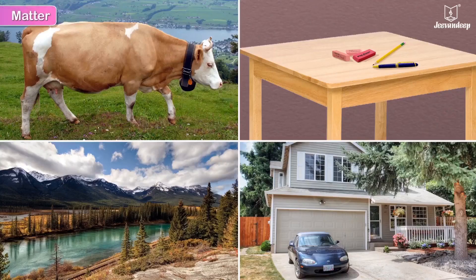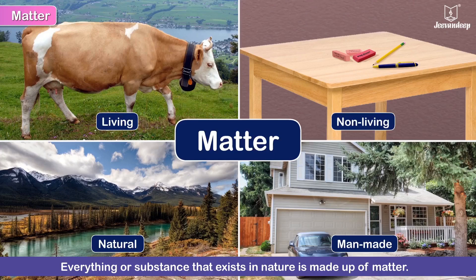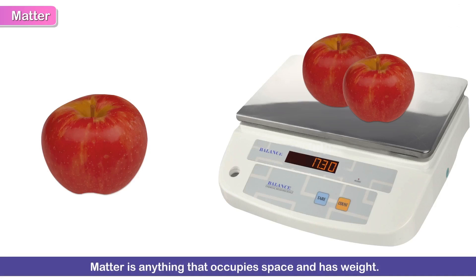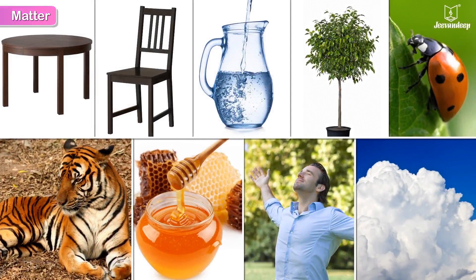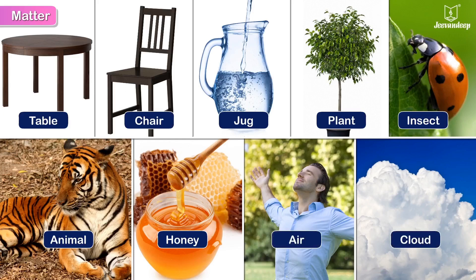Matter. We are surrounded by different things or substances — some living, some non-living, some natural, some man-made. But there is one thing common in all of them. Everything or any substance that exists in nature is made up of matter. Matter is anything that occupies space and has weight. A table, a chair, a jug of water, a plant, an insect or an animal, honey, the air we breathe, even a cloud — are all examples of matter.